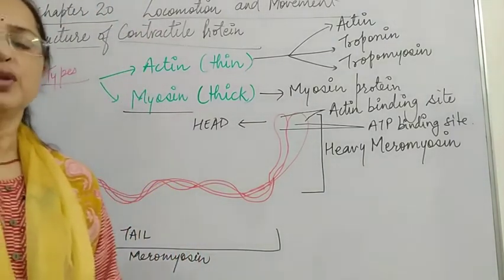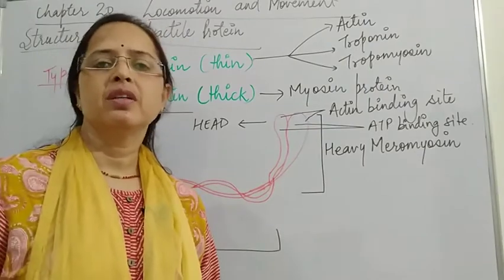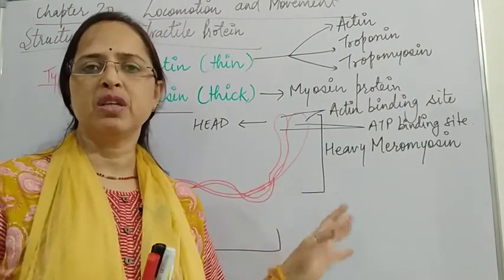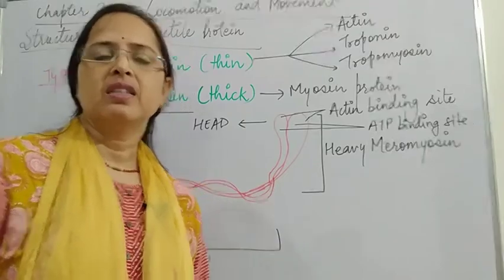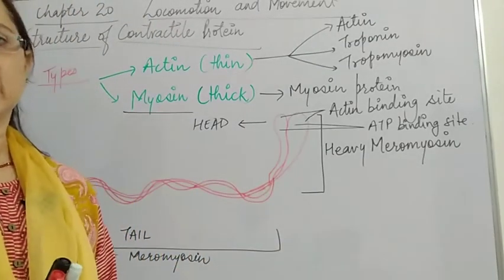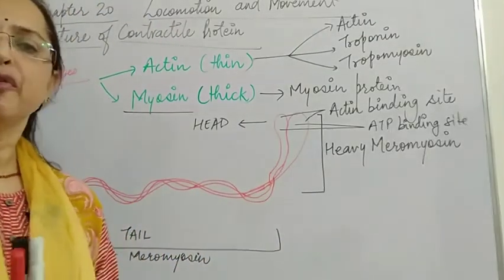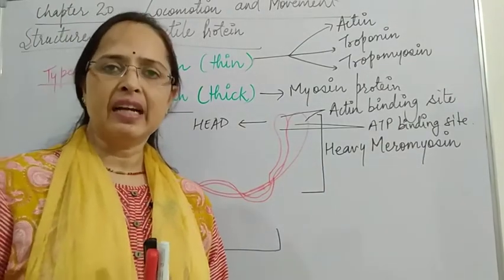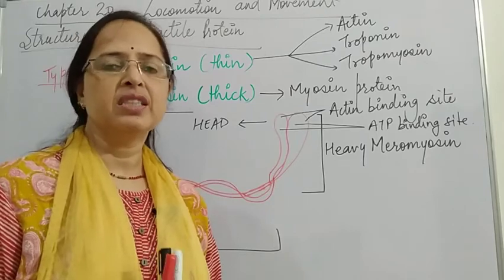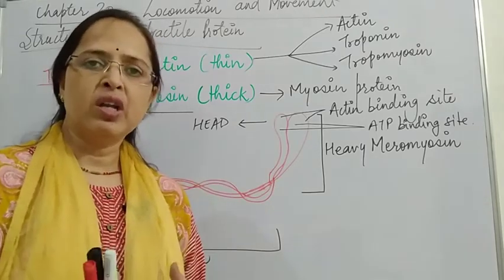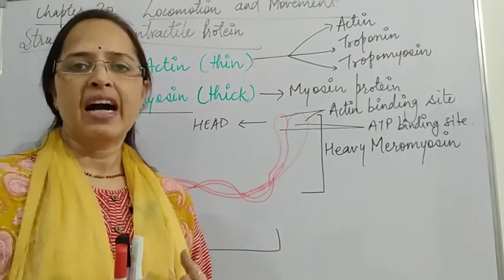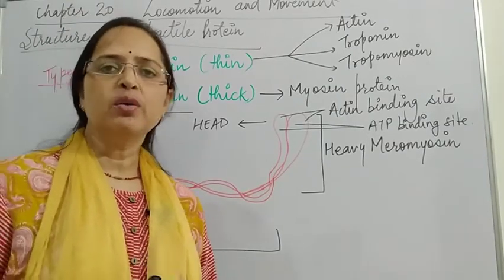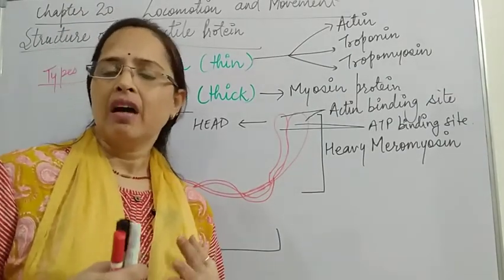Hello students, today we are continuing with this chapter. In the previous video of the same chapter, we discussed the detailed structure of the myofibril — what is the Z line, sarcomere, H line, M line, I band, A band, and their arrangement.